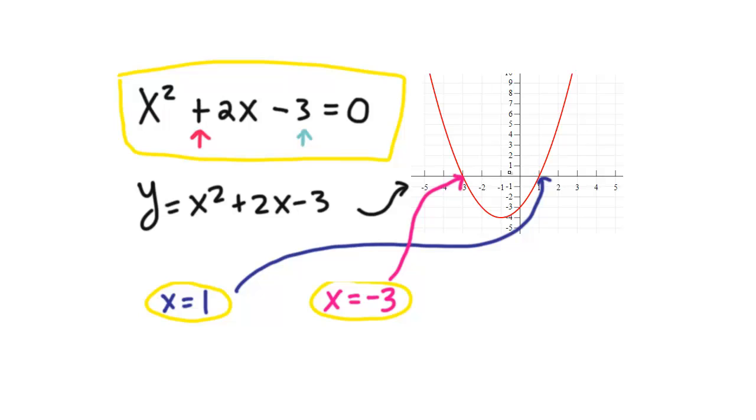Right, so these two points right here and right here, the x-intercepts, because this is the x-axis and this is the y-axis, those are the two solutions or the roots of the quadratic equation.